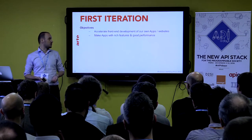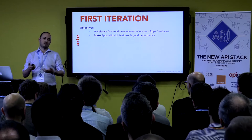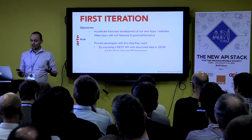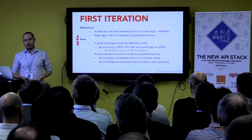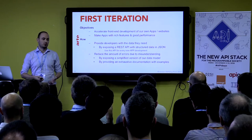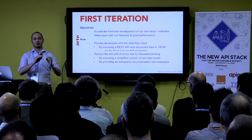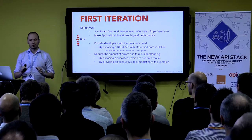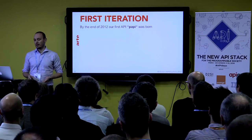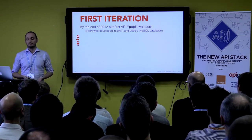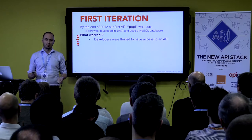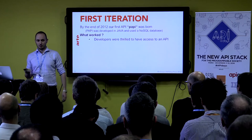Our first iteration's objective was to build great apps and accelerate app development. The idea was to expose the first REST API with data structured in JSON, and also to reduce the amount of errors due to our complex data model by simplifying it — just programs, videos, shows, TV series — a very easy-to-understand data model. Our first iteration was born in 2012, it was called PAPI. API developers were thrilled because back at the time, APIs were pretty rare.